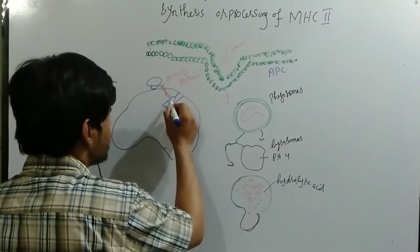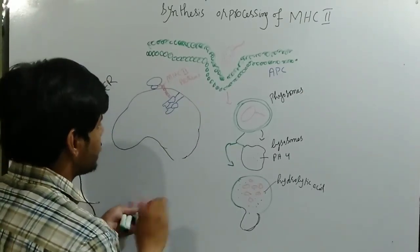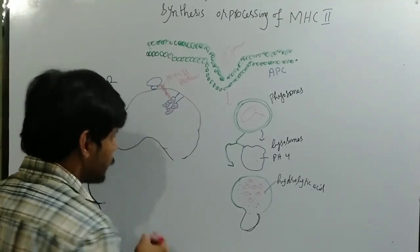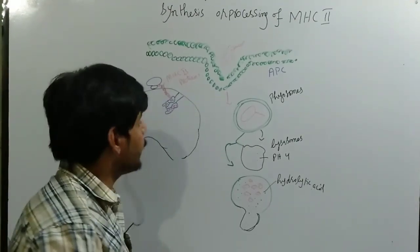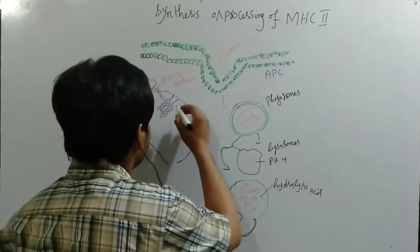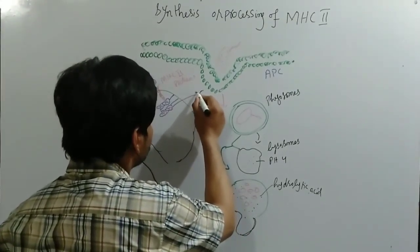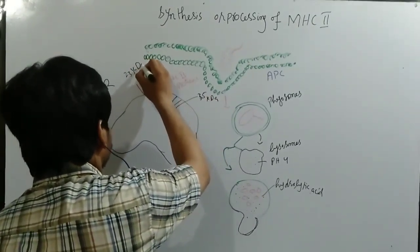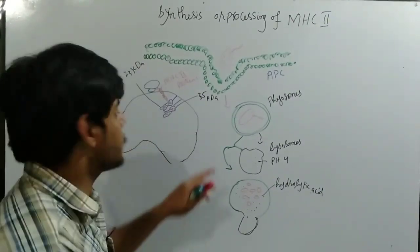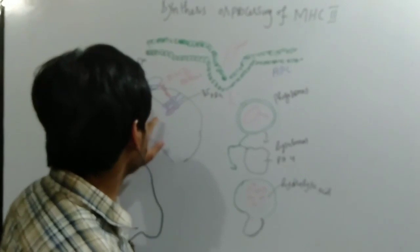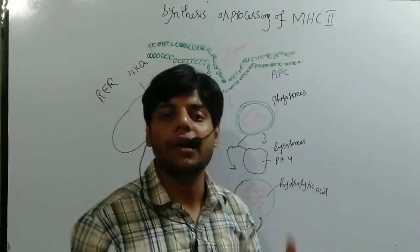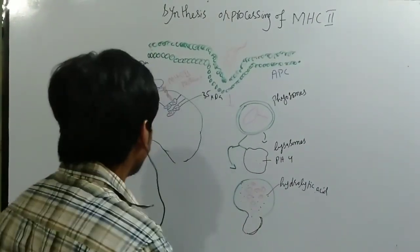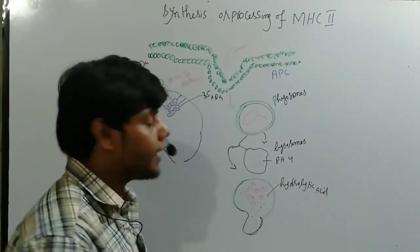The MHC2 molecule has alpha1, alpha2, beta1, and beta2 subunits. The alpha subunit has a weight of 35 kilodaltons and the beta subunit has a weight of 23 kilodaltons. When they are combined together we get a 58 kilodalton complete MHC2 molecule.